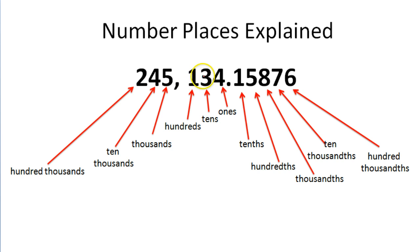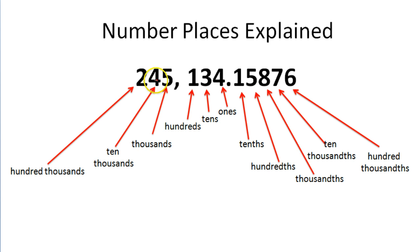Next door to that, the 1 is occupying the 100's place. The 5 would be occupying the 1,000's place. The 4 here would be occupying the 10,000's place. And the 2 here would be occupying the 100,000's place.